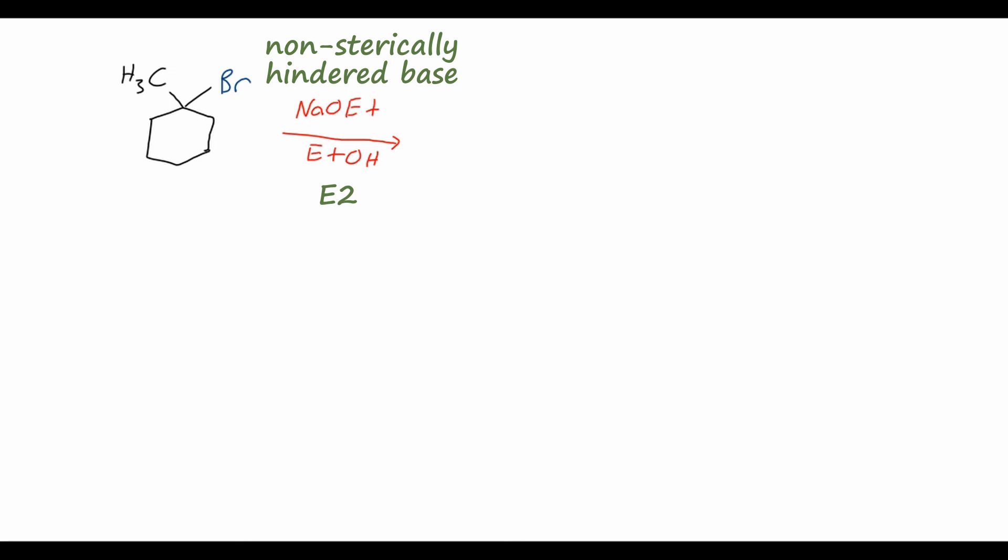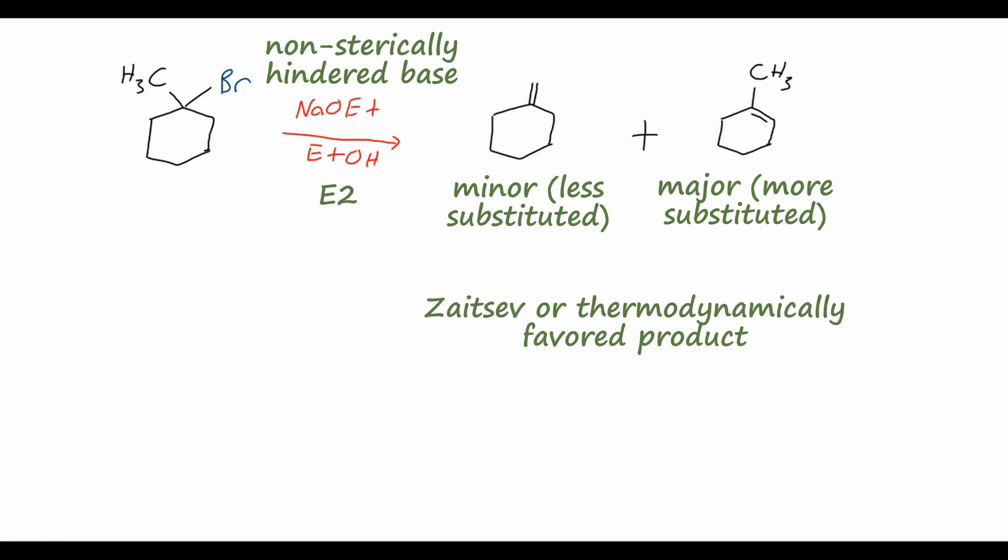So with an E2 reaction, we could get two different products from this starting material. We could remove the proton from the methyl group, giving us this product where the alkene is between these two carbons. We could also remove a proton from the cyclohexane ring, giving us this alkene where the double bond is inside the ring. So which one of these products would be the major product in our reaction? Well, like we just talked about, usually the more substituted alkene will be more stable than the least substituted one. So our second product is a trisubstituted alkene, whereas the first one is only disubstituted. So that means this right-hand product will probably be our major product. This is also called the Zaitsev or the thermodynamically favored product, because the more substituted alkene is more thermodynamically stable.